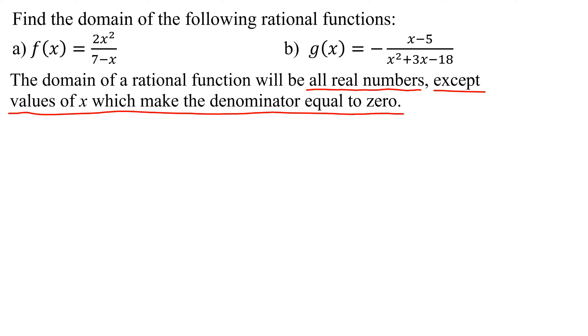Let's look at our first example. We have f of x equals 2x squared divided by 7 minus x. What we're going to have to do is find the values of x that make the denominator 0.